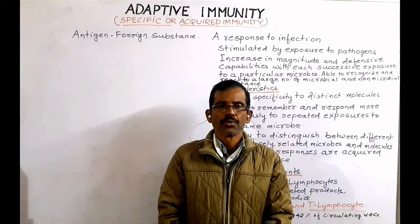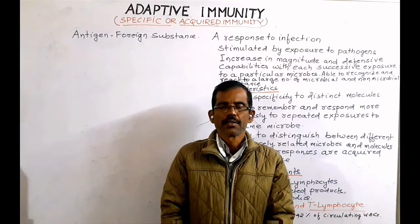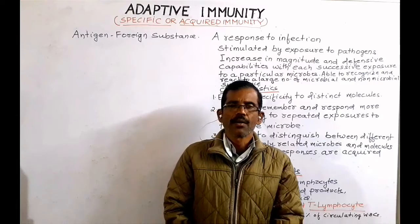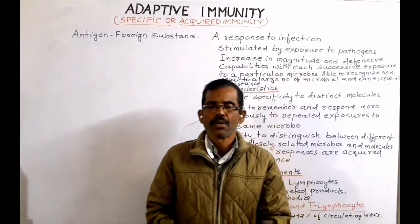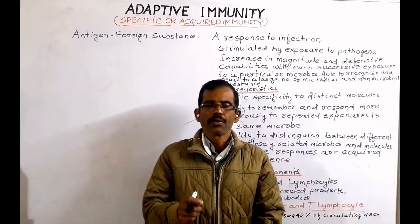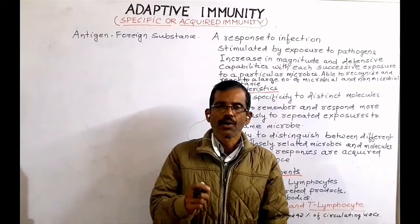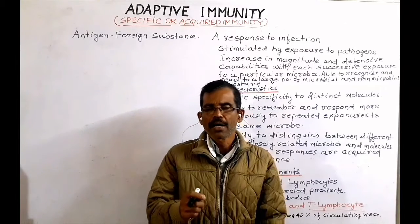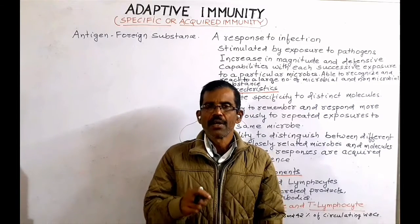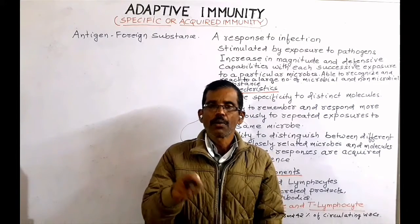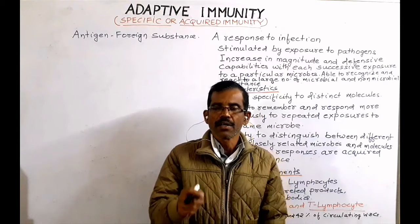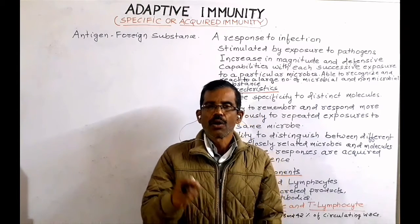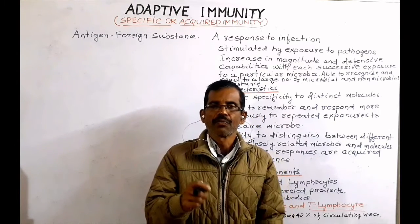Hello friends, welcome to some biology class. Immunity is a complex biological system which can recognize and tolerate whatever belongs to self, and can also recognize and reject what is non-self or foreign.